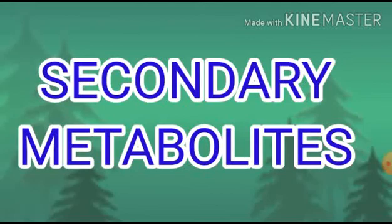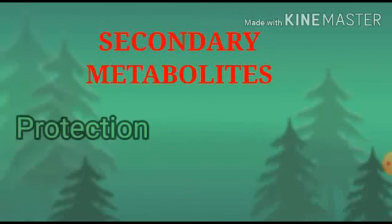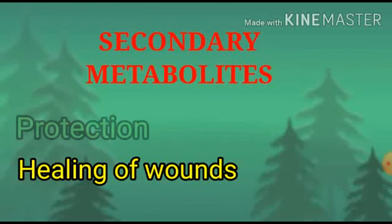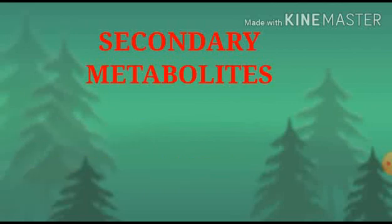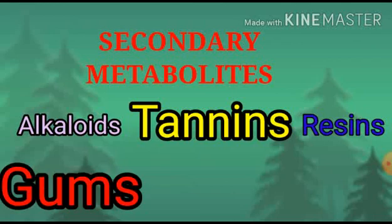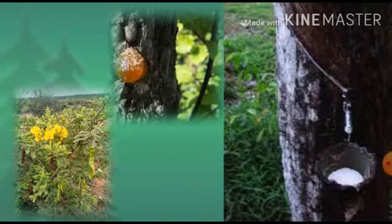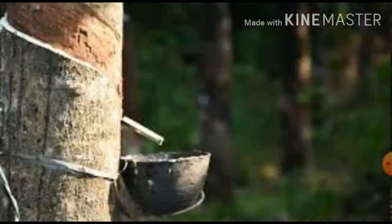Waste products not useful for normal growth and development are known as secondary metabolites. These secondary metabolites help the plant by giving protection against insects and herbivores, and in wound healing. Based on their chemical nature, secondary metabolites can be classified into alkaloids, tannins, resins, gums, and latex. This is how plants excrete. Humans have found medicinal and commercial uses of these secondary metabolites. In the next video, we will discuss the uses of secondary metabolites.